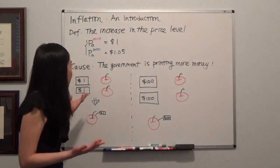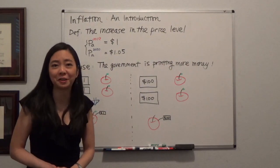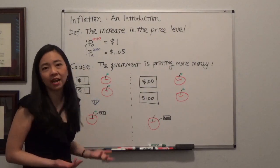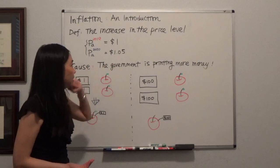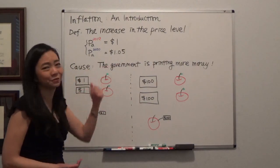For example, if an apple is sold for a dollar in year 2019, and a similar kind of apple is sold for a dollar and five cents, then you know the price level is increasing, and we call this inflation.